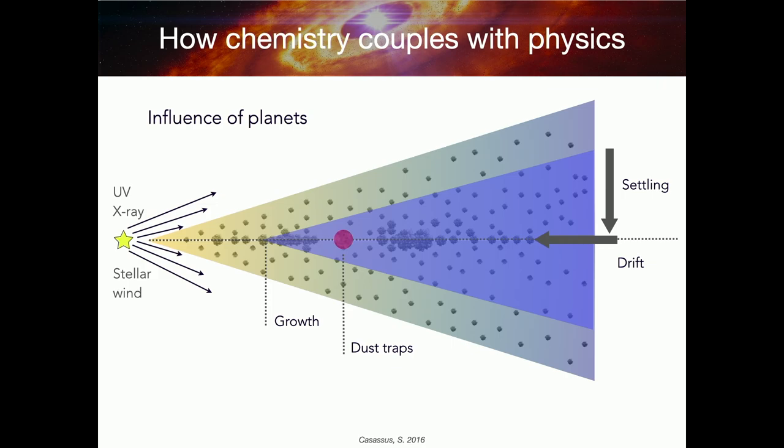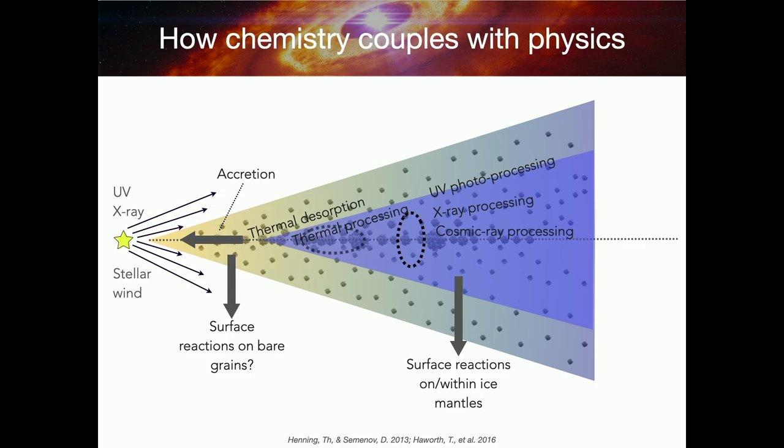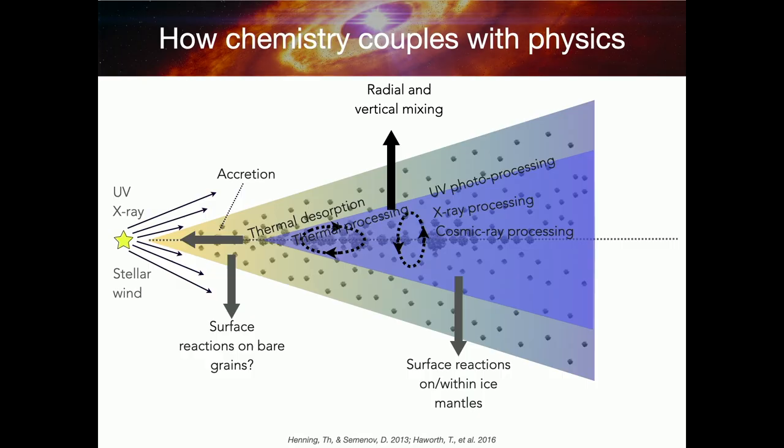Because complex organic molecules form on icy grain surfaces, modifying the dust distribution in the disk also modifies the chemistry on those grains. Processing by UV, X-rays, and cosmic rays can change ice composition; radial and vertical mixing transports material between the cold midplane and the disk atmosphere and between inner and outer disk regions. Understanding what chemistry happens on icy dust grains in disks — how that material is processed by being present in the disk — is a core area of this research.